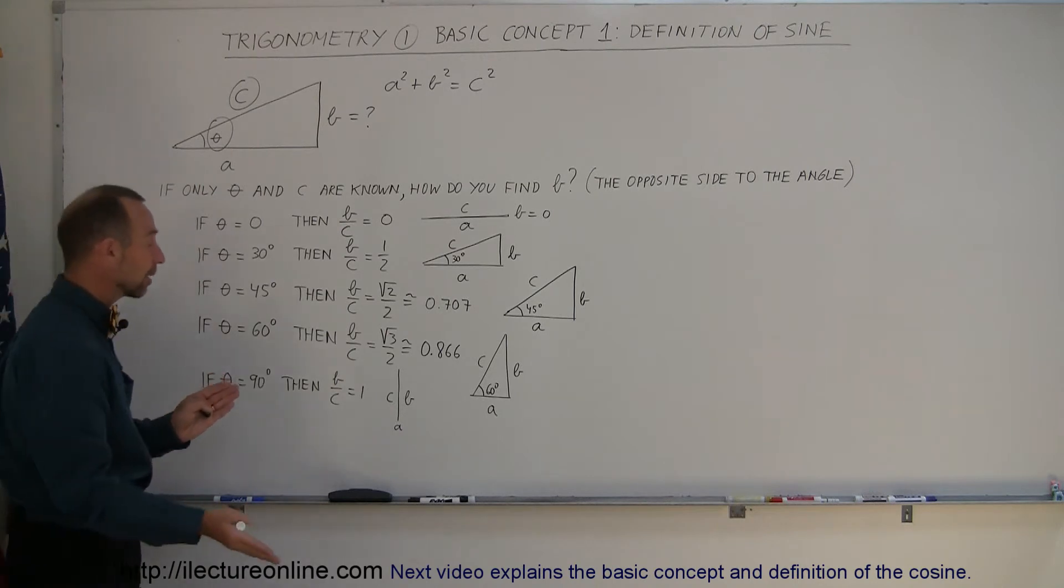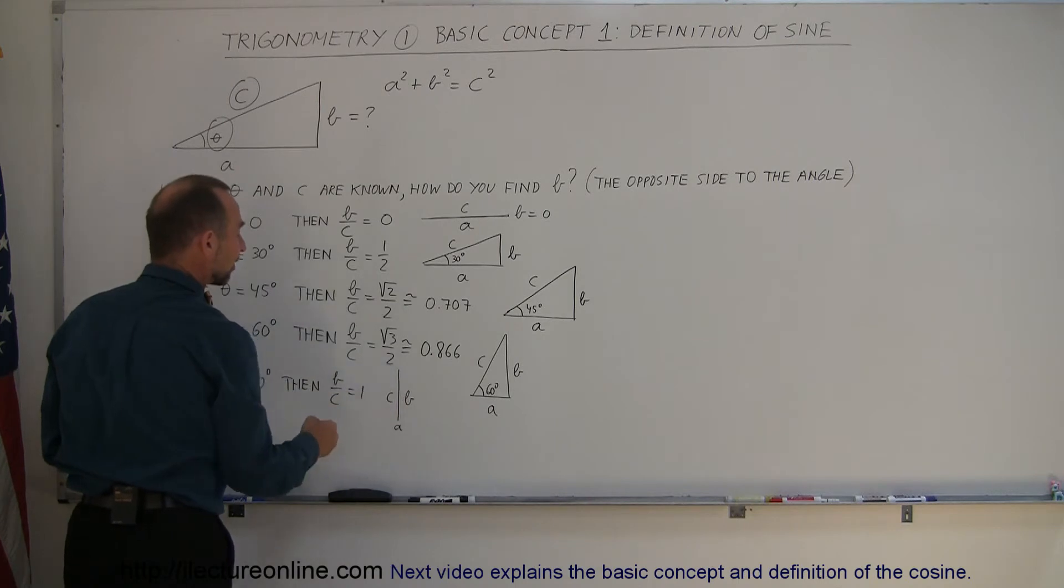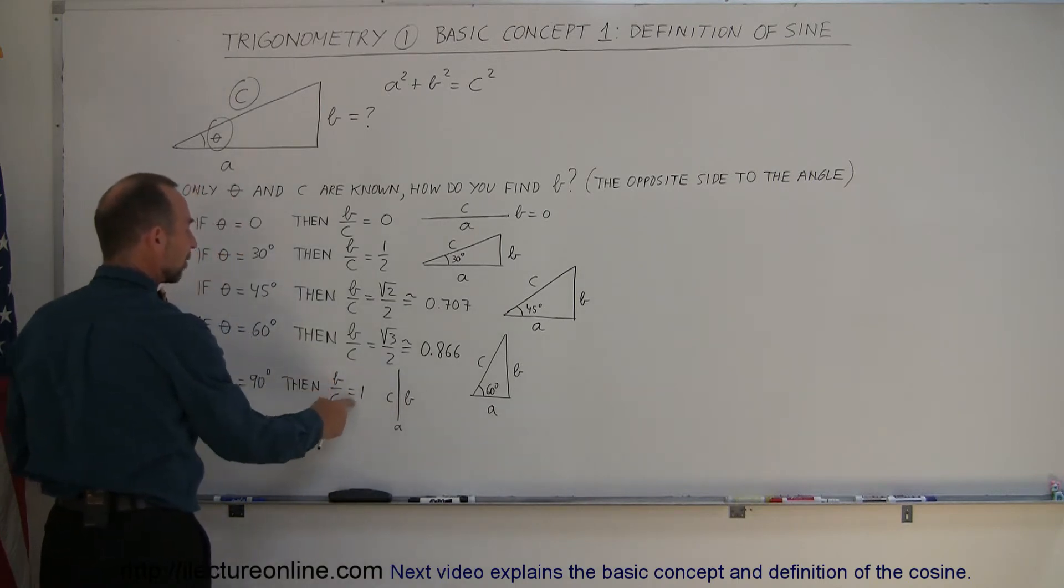Finally, when the angle becomes 90 degrees, then A goes to zero and C and B will be the exact same length, so the ratio of B over C is equal to one.